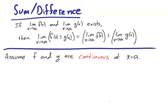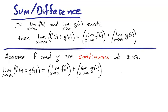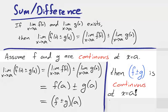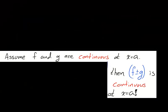A similar law holds for continuity. Suppose f and g are continuous at a. Using our sum and difference limit law, we use the fact that f and g are continuous at x equals a to determine that the limit of f plus or minus g as x approaches a is f plus or minus g at a. That is, if f and g are continuous at x equals a, then f plus or minus g is continuous.